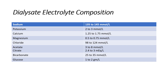Calcium-free dialysate solution is also available. Magnesium concentration is usually from 0.5 to 0.75 millimole per liter. Chloride is from 98 to 124 millimole per liter. For the adjustment of pH, either acetate or citrate is used. If acetate is used, the usual concentration is from 3 to 8 millimole per liter. If citrate is used, the concentration ranges from 2.4 to 3 millimole per liter. Bicarbonate concentration ranges from 25 to 35 millimole per liter.